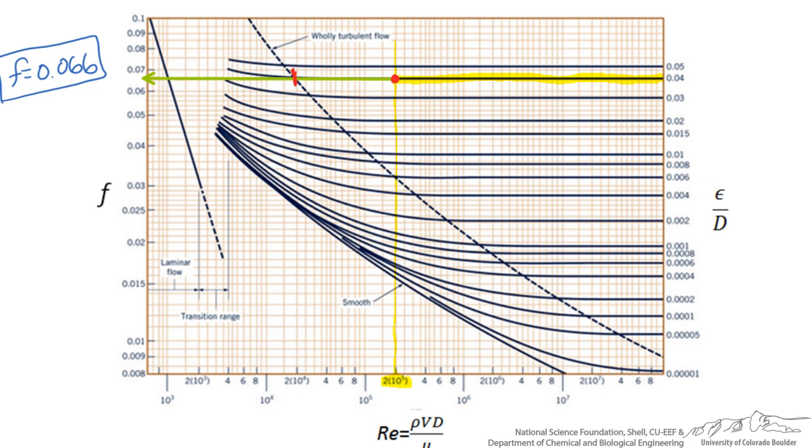You can see that at lower frictional factors the Reynolds number does play a higher role, but there are still regions where the lines are straight and increasing the Reynolds number would not increase the frictional factor.